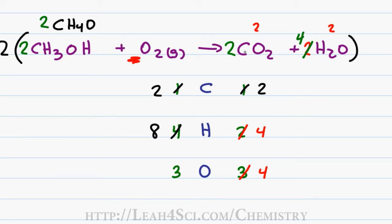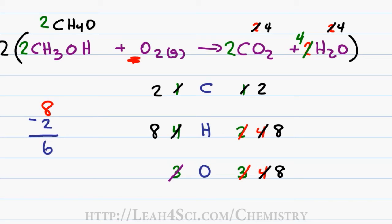On the right I have 2 carbons and 4×2=8 hydrogens. For oxygen on the right: 4 waters gives me 4 oxygens, and 2 CO2 gives me another 4 oxygens, for a total of 8. Now let's find 8 oxygens on the left. We have 2 oxygens in methanol, so we need another 6. To get 6 from O2, we divide 6 by 2 and place a 3 in front. So 2 oxygens in methanol plus 3×2=6 gives a total of 8. The balanced reaction is: 2 methanol + 3 O2 → 2 CO2 + 4 H2O.